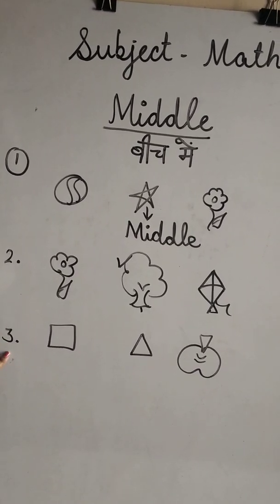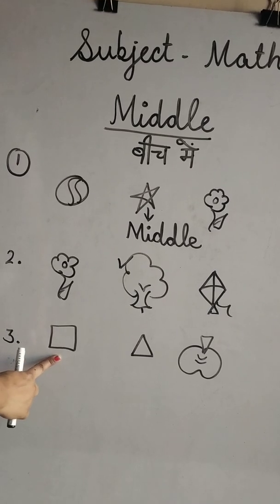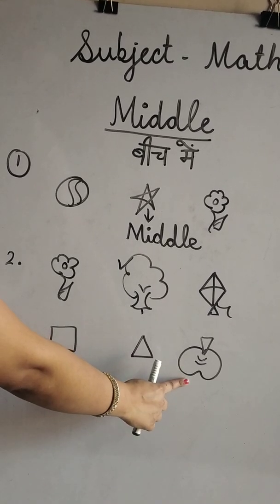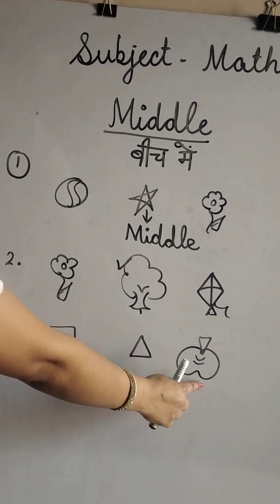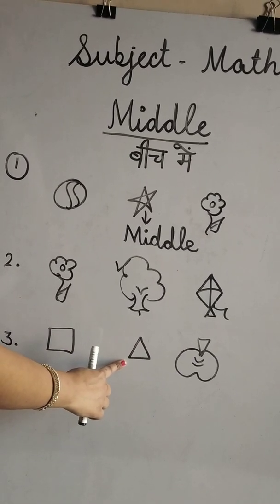Now, number three. The square is on left side. The apple is on right side. The triangle is in middle.